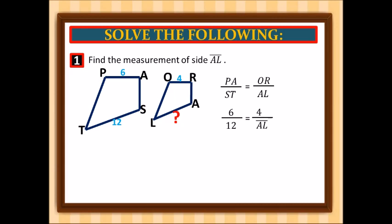Now we cross multiply. We have 6AL, and 12 times 4 is 48. We divide everything by 6, so AL is equal to 8. Therefore, the value of side AL is equal to 8.